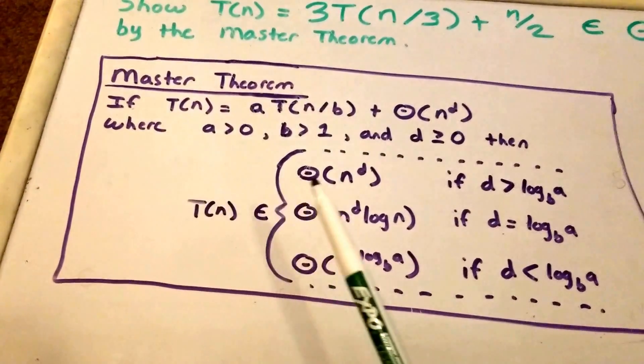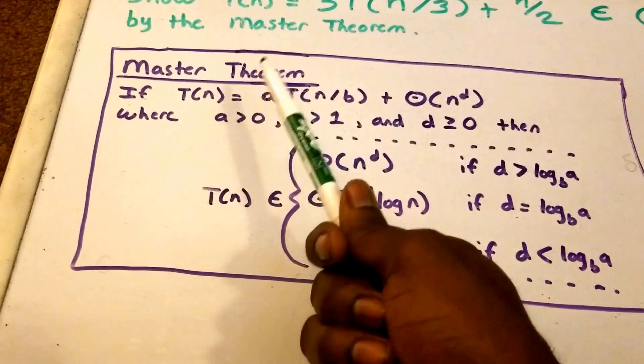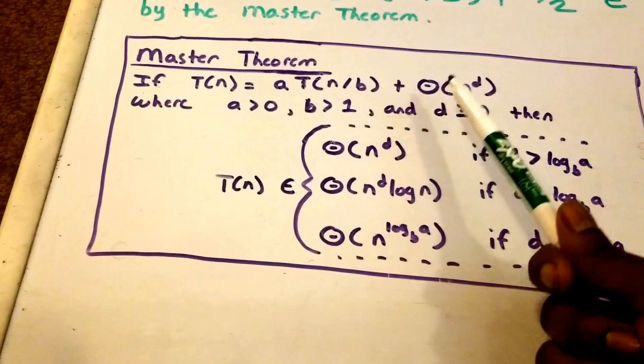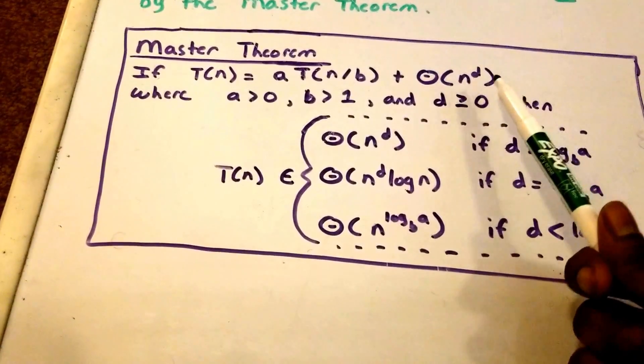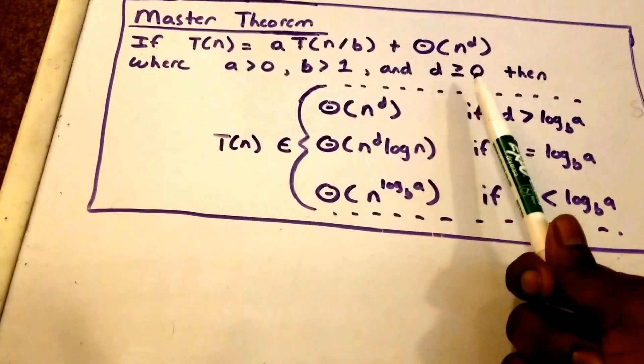And here in the purple rectangle, I have the master theorem that says if T(n) is in the form or is equal to a times T(n/b) plus theta of n to the power of d, where a is greater than 0, b is greater than 1, and d is greater than or equal to 0.